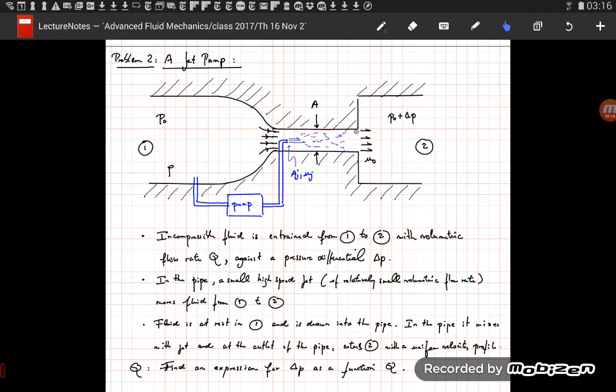And when it reaches the end of the pipe, we'll assume that the velocity is uniform at the outlet of the pipe.